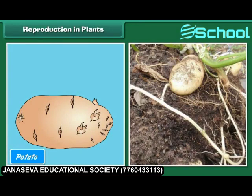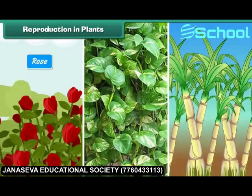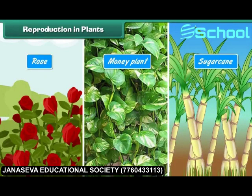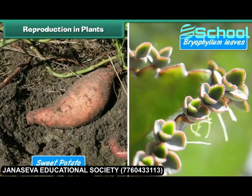Some plants can reproduce from their body parts. For example, potato can be developed from an underground stem having buds on it. Rose, money plant, and sugarcane can be developed from stem cuttings. Bryophyllum can be developed from its leaves, and sweet potato grows from its roots.